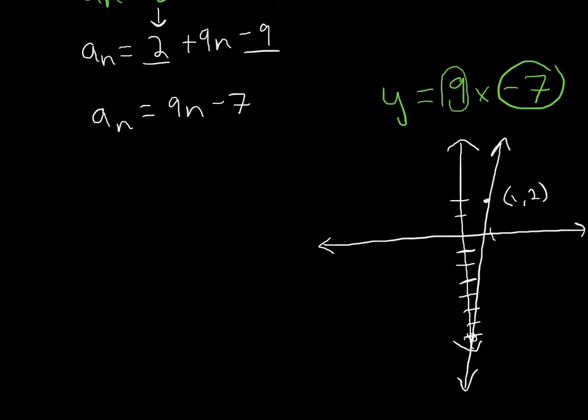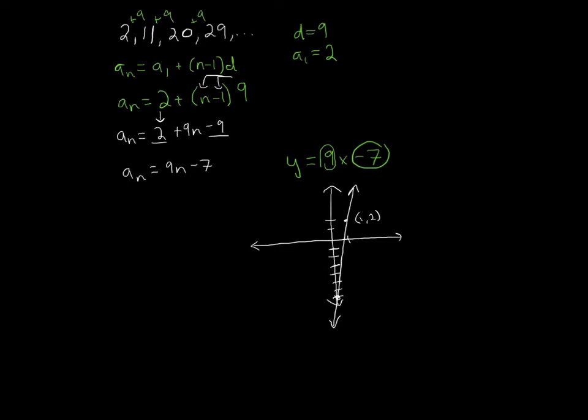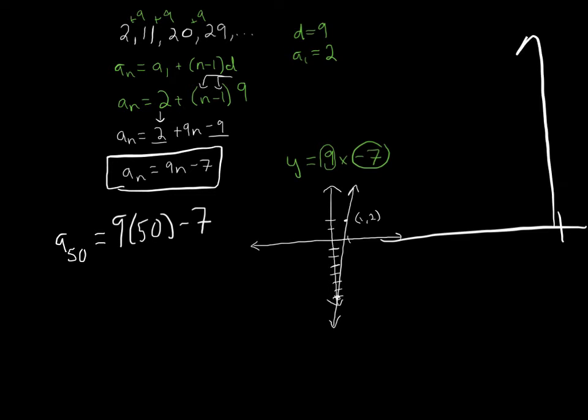Now, one thing that's good with the explicit formula that a recursive formula cannot do for us is, let's say, we wanted to find the 50th term. Well, using the explicit formula, we can go straight to a_50. If we were using the recursive formula, remember, we would have to find the 5th, the 6th, the 7th, the 8th, 9th, 10, 11, 12, all the way up to 50. So, we'd have to do a lot of iterations of that formula. The 50th term in the explicit formula is very simple. We just plug in 50 for n. Notice that would be 50 for x, so x would be all the way out here, and our line would be way up above my screen, because that's a pretty steep slope for this. But if we do this, we get 450 minus 7, which is 443. And so that's what the explicit formula can do of an arithmetic sequence.